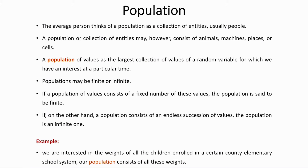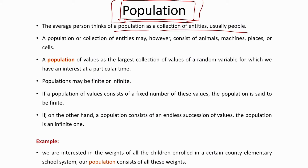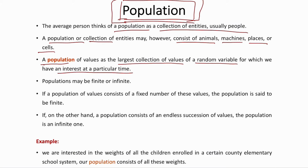In statistics, we are always focused on what we call the population. In the statistical sense, a population does not mean the same as the everyday meaning. A population is the largest collection of values of a particular random variable in which we have an interest at a particular time, and can consist of animals, machines, places, or cells. Populations can be finite or infinite — for example, heart rates of all people constitutes an infinite population with no clear stopping point.